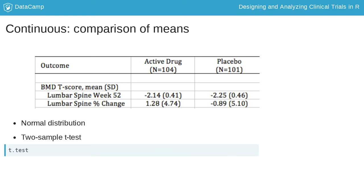For the t.test function, we specify the outcome variable, treatment group and dataset. We also use the var.equal argument to specify whether we are assuming that the two variances, or standard deviations, are equal.